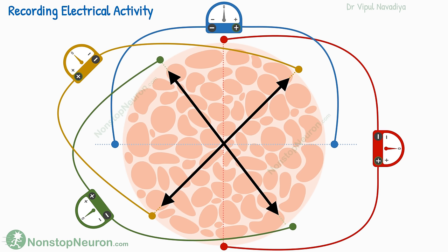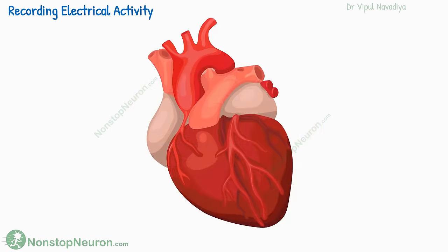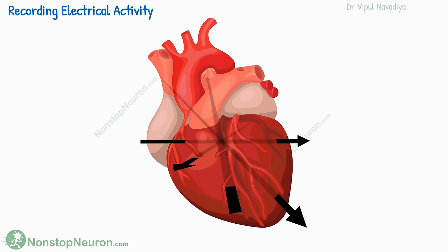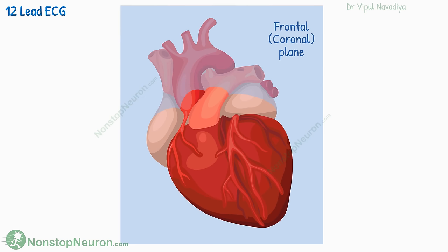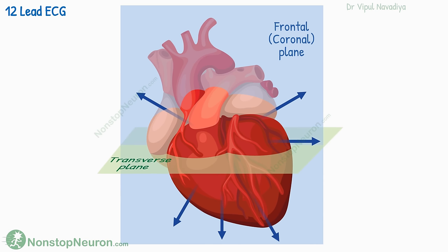Now it's time to move from two dimensions to three dimensions. The heart shows electrical activities all around in three dimensions, so for better mapping of its electrical activity, we need to record from multiple angles. Generally, we record twelve angles. On the frontal or coronal plane, we record six directions. And on the transverse or horizontal plane, we record six more. Collectively, all these angles provide a comprehensive view of all cardiac activity.